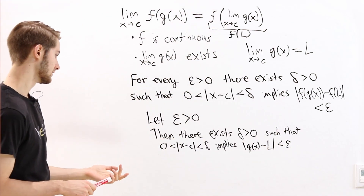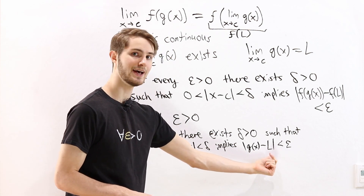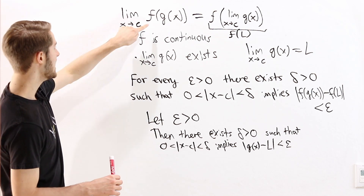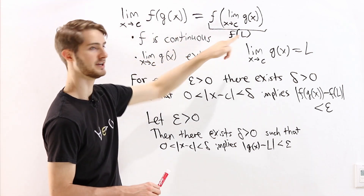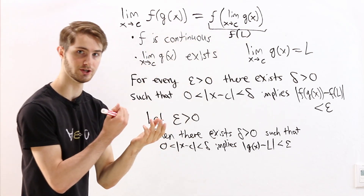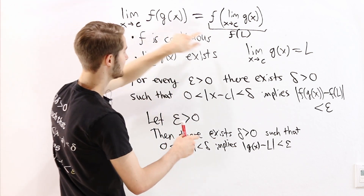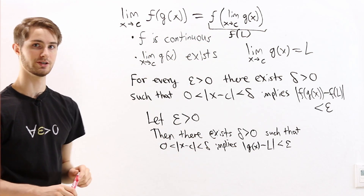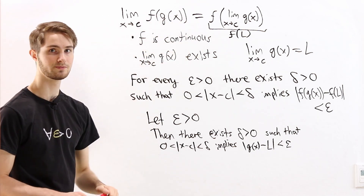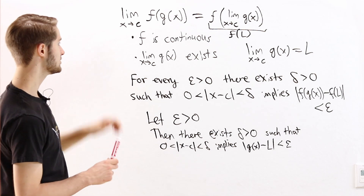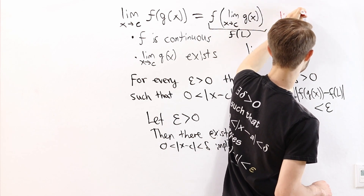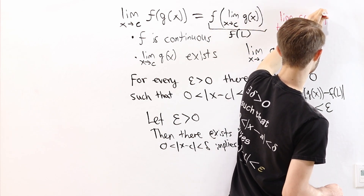We now know that g of x can be really close to L if we pick a small delta, but we want to know that f of g of x is really close to f of L. So if we know that g of x and L are close to each other, how do we know that f of g of x and f of L are also close to each other? That's where the first condition comes in — that f is continuous. The definition of f being continuous is that the limit as t approaches L of f of t equals f of L.